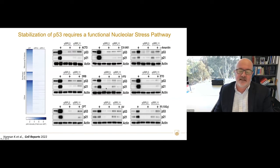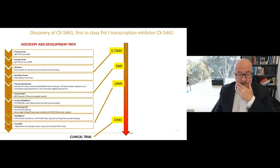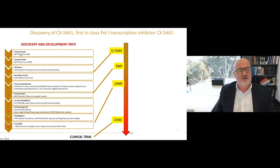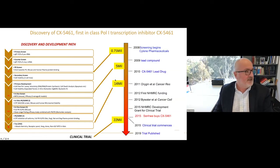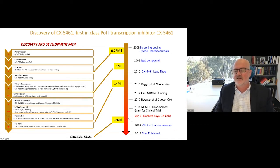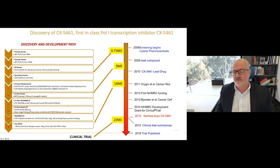We set out to harness this to develop drugs. We performed high-throughput screens of a compound library of 100,000 compounds looking for things which inhibited POL1 transcription, with a counter-screen to ensure they didn't inhibit a POL2 gene. We went through various PK oral cassettes and secondary screens. Screening began in 2008, a lead drug emerged in 2010, our first paper in 2011, and first funding four years after we started. The breakthrough paper was a Cancer Cell paper that led to funding for a clinical trial, which is now being completed. This drug inhibits the initiation of POL1 transcription — it's called CX5461.